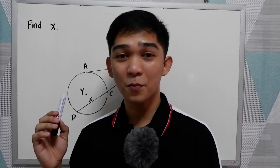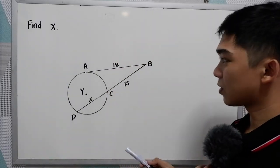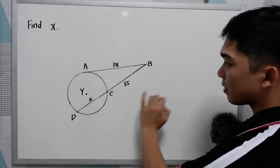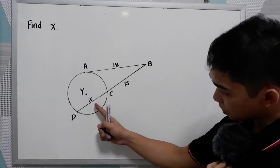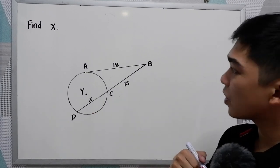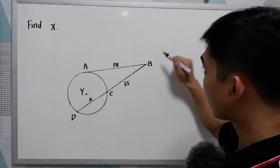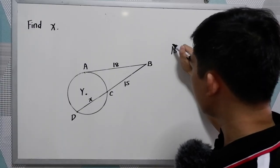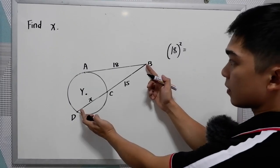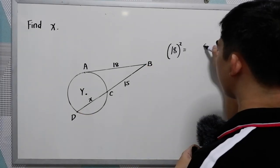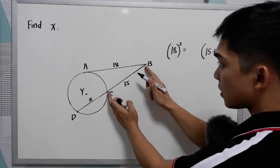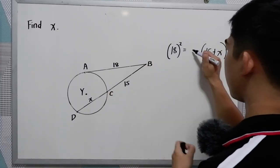Our second example — find X. Study the circle: we have a tangent segment and a secant segment. X is located on the secant. Following our theorem, 18 squared is equal to the total length, which is 15 plus X, times the external part, which is 15.